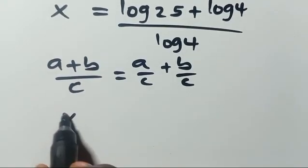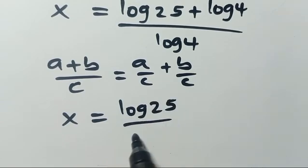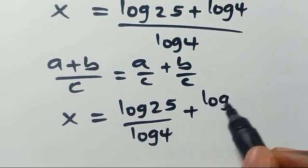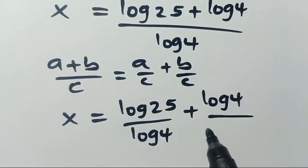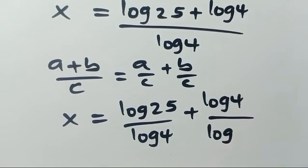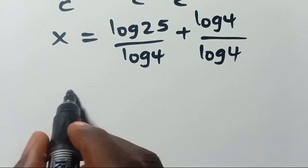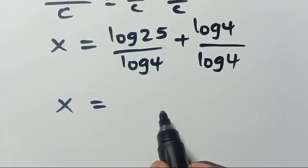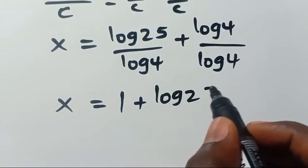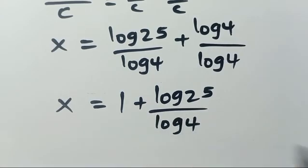So from here we have x equals log 25 divided by log 4, plus log 4 divided by log 4. Since log 4 divided by log 4 equals 1, we have x equals 1 plus log 25 divided by log 4.